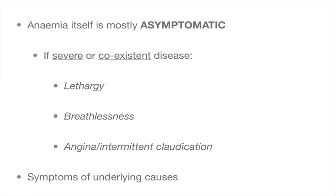Regarding clinical features of anemia in general, anemia itself is mostly asymptomatic. However, if there is severe or co-existent disease, often cardiac or pulmonary disease, symptoms can be quite severe. These include lethargy, breathlessness, and precipitation of underlying conditions such as ischaemic heart disease causing angina, peripheral vascular disease causing intermittent claudication, and symptoms of underlying causes such as malignancy.